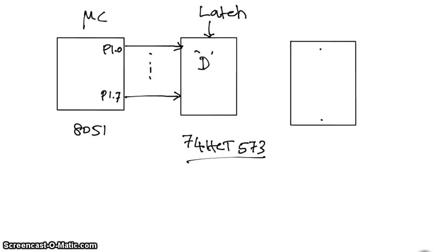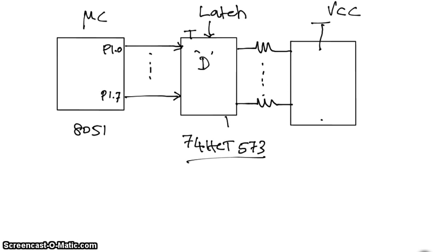We are going to use a common anode configuration. The middle pin is connected to VCC, and the remaining pins — segment A, B, C, D, E, F — are identified and connected through current-limiting resistors. The D latch must be provided with VCC and ground. There are two control signals: output enable and latch enable. You need to refer to the datasheet for the appropriate pin values and control signal levels.